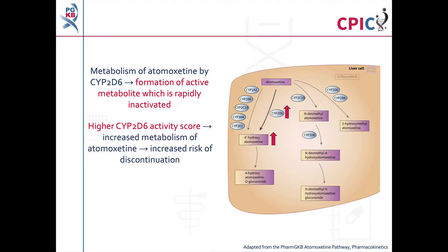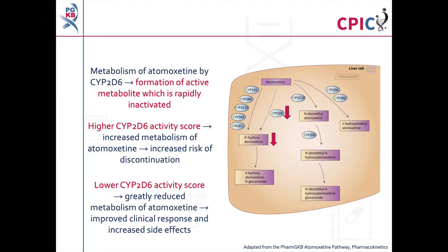In patients with higher CYP2D6 activity scores, the metabolism of atomoxetine is increased. This puts the patient at an increased risk of not responding to atomoxetine therapy and at an increased risk of discontinuing atomoxetine therapy. In patients with lower CYP2D6 activity scores, atomoxetine metabolism is reduced. As a result, these patients may experience more side effects but also an improved clinical response to atomoxetine.